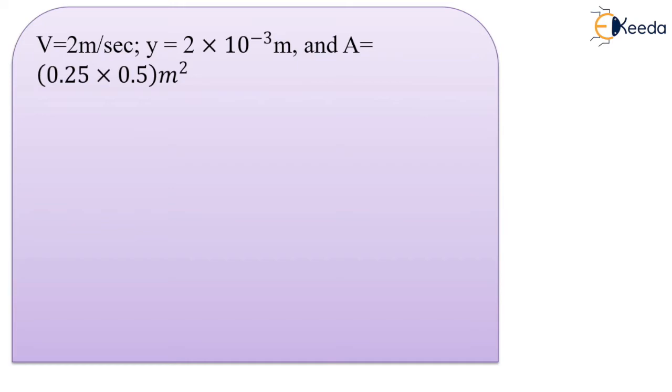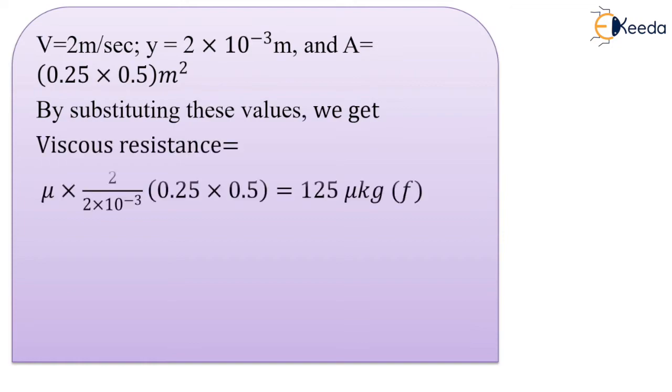it is in millimeter so we will convert it in meter by multiplying 10 raise to minus 3, and area is nothing but 0.25 meter multiplied by 0.5 meter. So we will have viscous resistance as mu into 2 upon 2 into 10 raised to minus 3 multiplied by 0.25 into 0.5, that is 125 into mu, and its unit will be kg force.